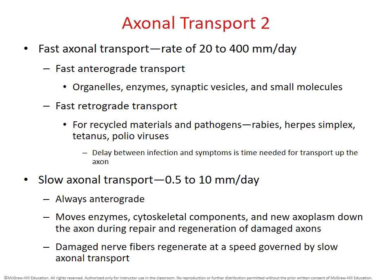The type of transport differs between different kinds of materials. We have fast transport mechanisms and slow transport mechanisms. Fast axonal transport can occur in both anterograde and retrograde directions. Fast anterograde transport is used for things like organelles, enzymes, and synaptic vesicles — things we need to quickly get out to the axon terminal from the biosynthetic center in the cell body.